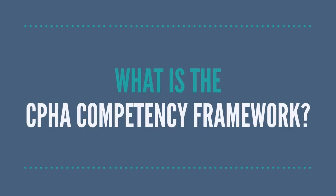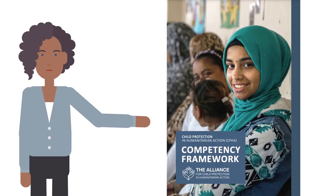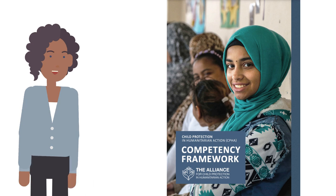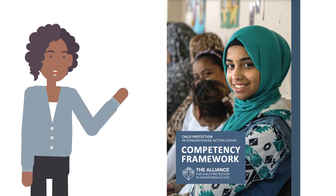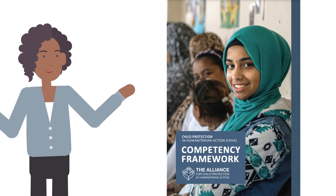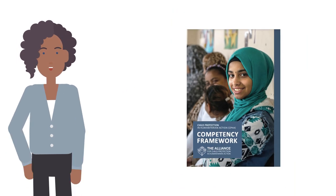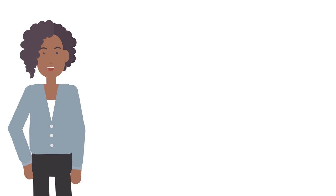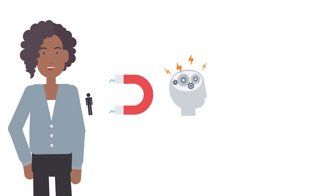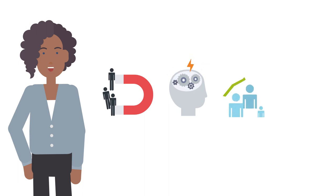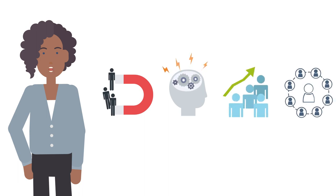What is the CPHA Competency Framework? The Child Protection and Humanitarian Action Competency Framework sets out the technical competencies required of CPHA practitioners working at three levels. It describes the expected standards of performance for 32 technical competencies that can be applied to different roles within the sector. The purpose of the Competency Framework is to inform staff recruitment, learning and professional development, performance management, and planning and organizational design.